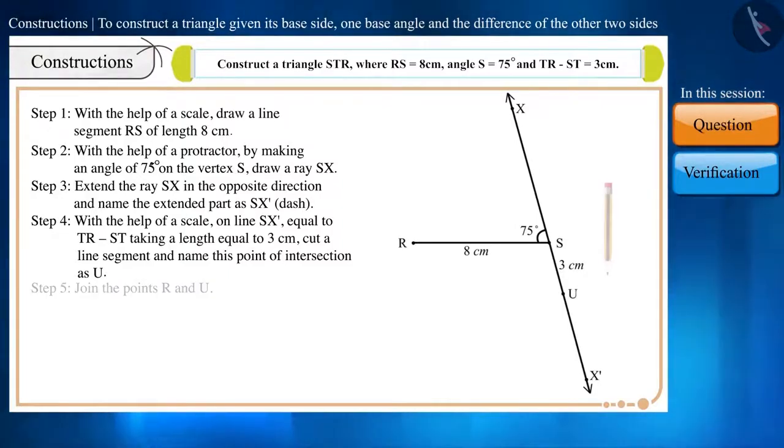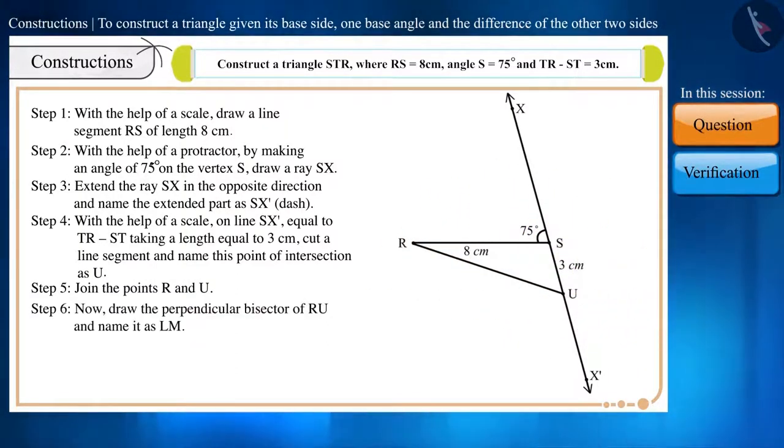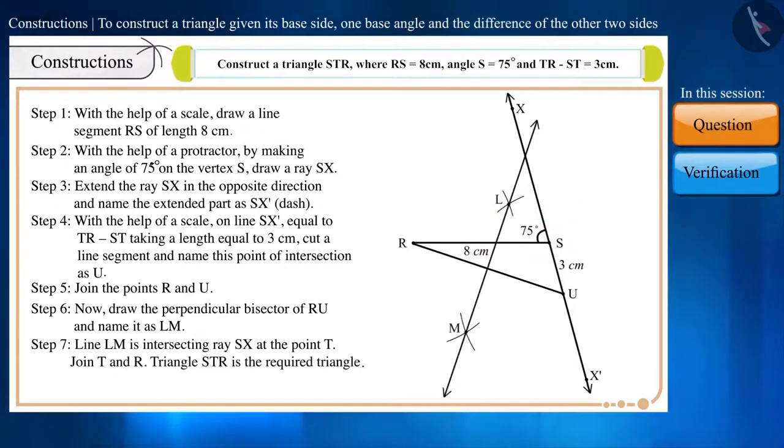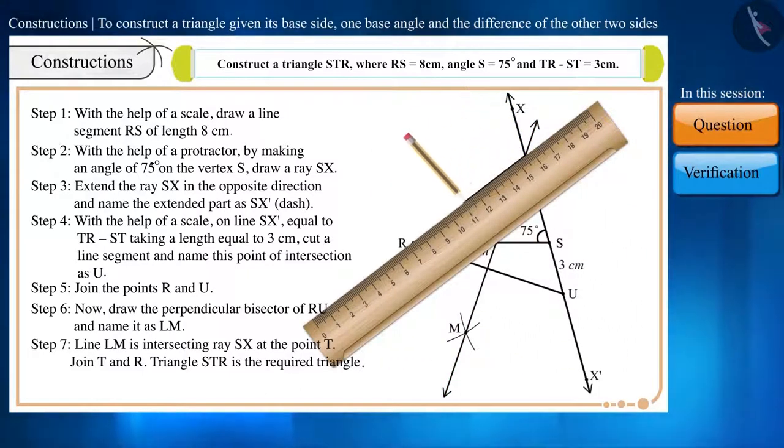Step 5: Join the points R and U. Step 6: Now, let's draw the perpendicular bisector of RU and name it as LM. Line LM is intersecting ray SX at point T. We will join T and R.